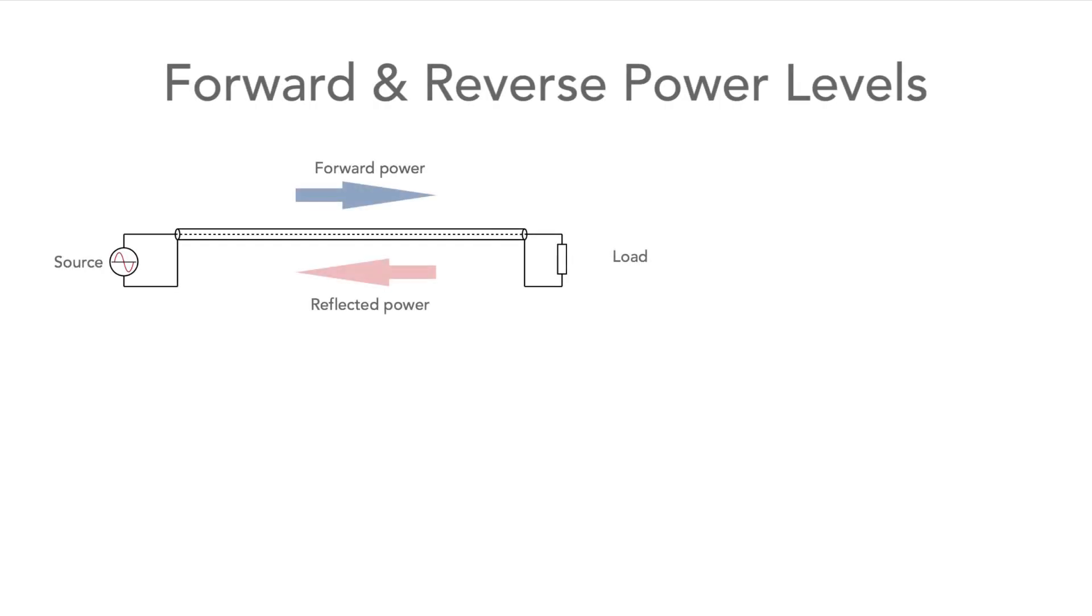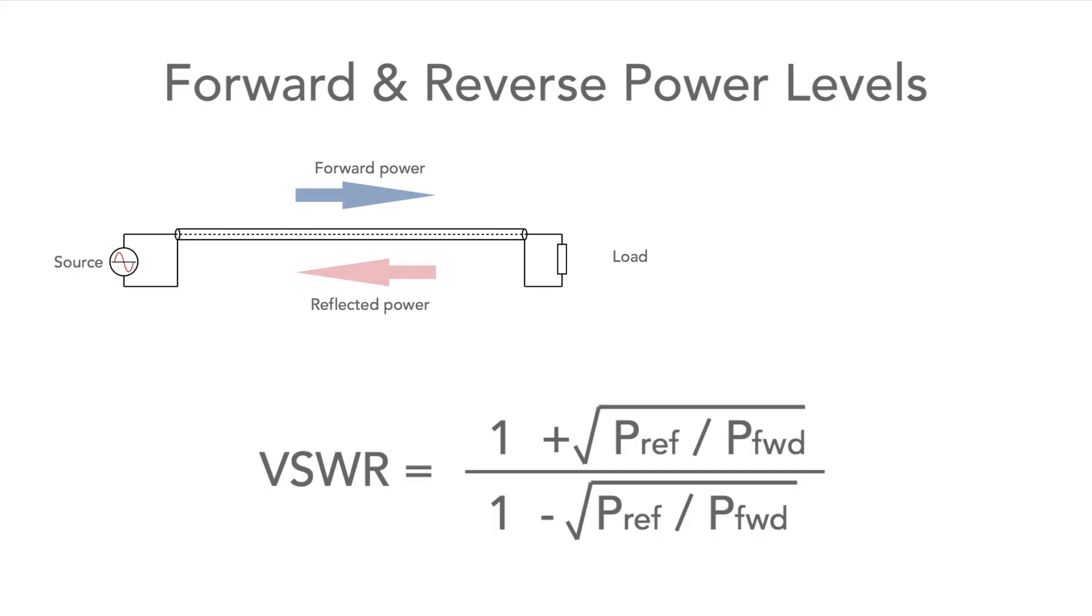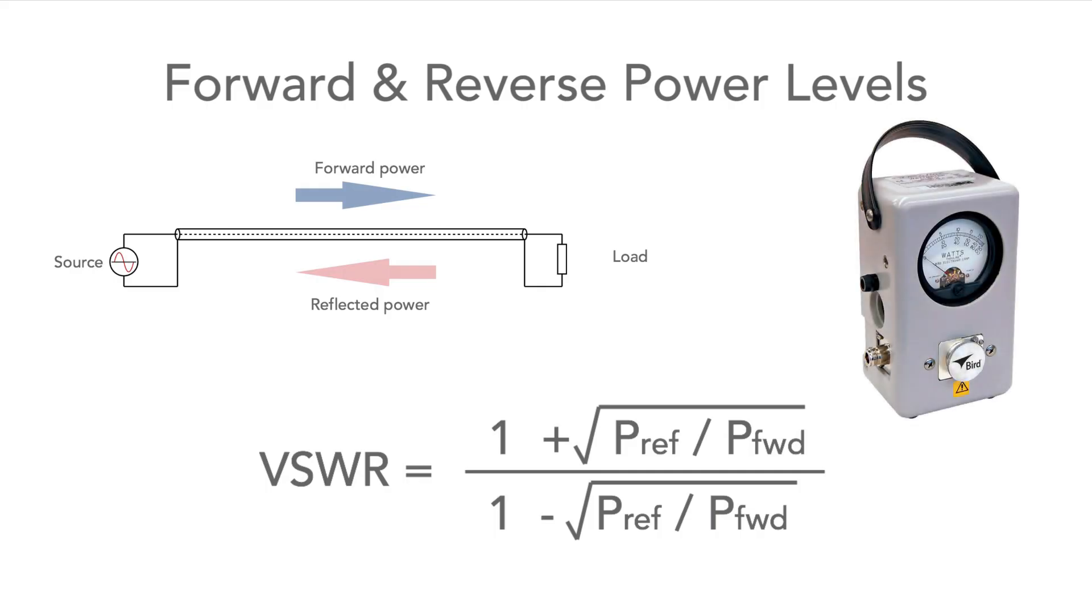Another useful equation calculates the VSWR from a knowledge of the forward and reverse power levels. Since these are proportional to the square of the voltage components. This equation can be very useful, especially when directional power meters are used.